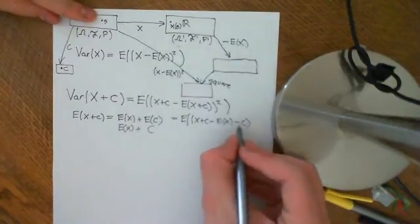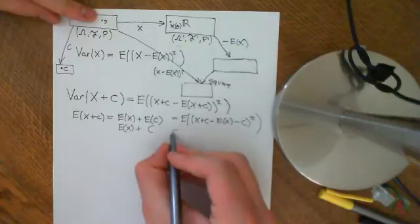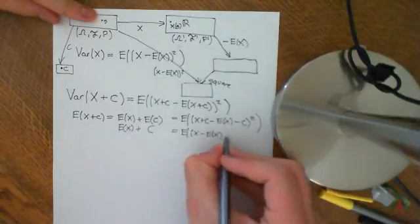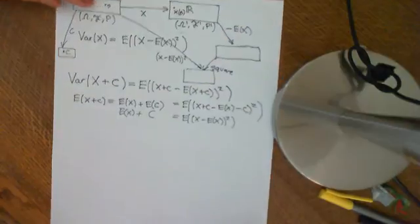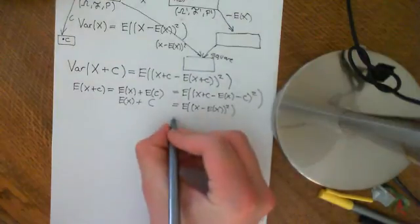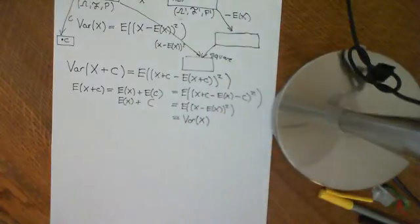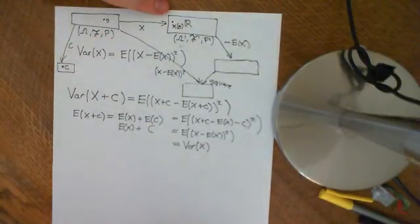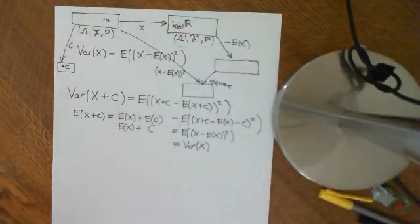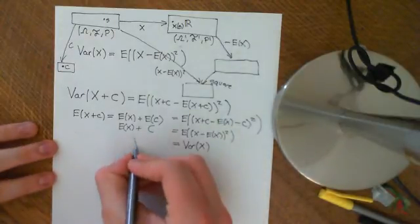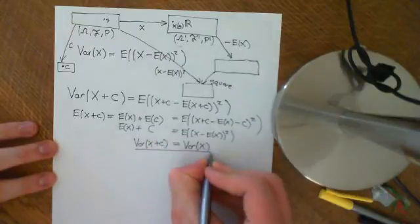The c and the minus c cancel each other out, so we get the expected value of (X − E[X]) squared. So the variance of X + c is the same as the variance of X. That makes sense: variance measures the spread of the probability distribution, and if you just shift the distribution by c, that doesn't change the variance — it changes the mean, but not the spread.